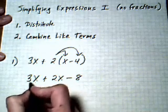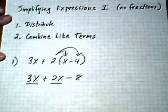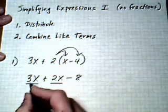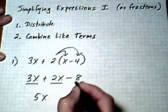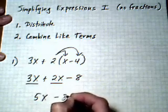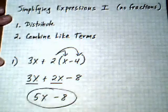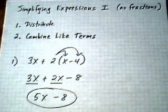Now we're going to combine like terms. 3x plus 2x — add the coefficients — we get 5x. Bring down the minus 8, and we have our answer: 5x take away 8.